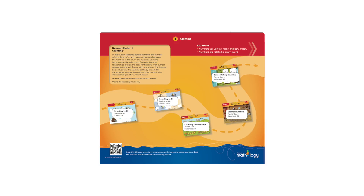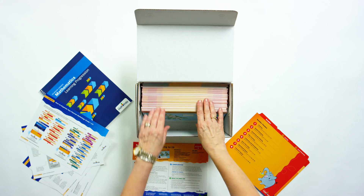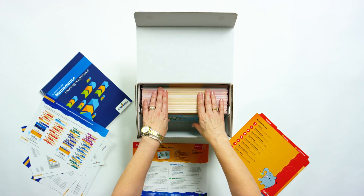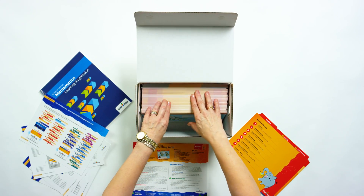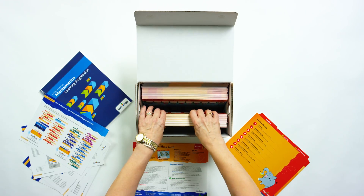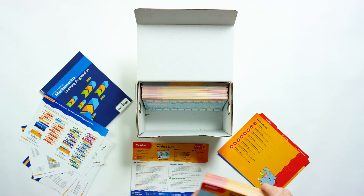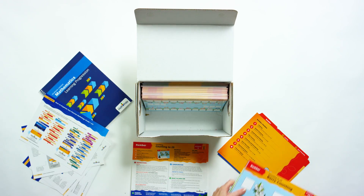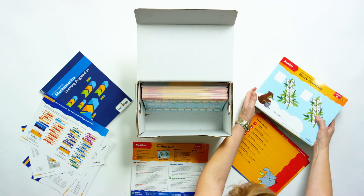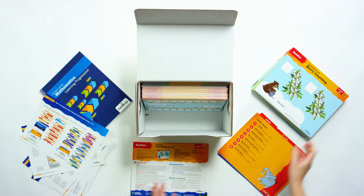Next, there are the cluster cards or tabs. Each cluster represents a math concept. There are more than 20 clusters in each grade. You'll see that each card details contents, so they're handy when organizing your kit or when looking for a specific card.